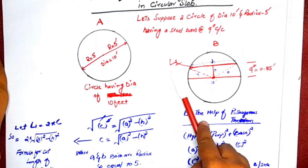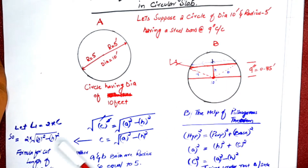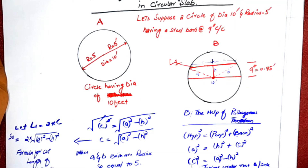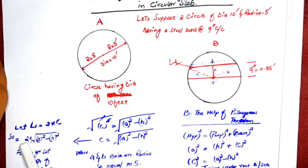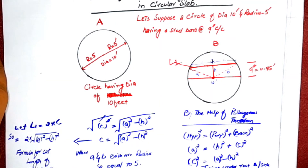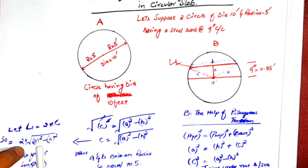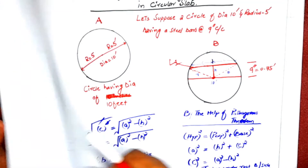Since L1 equals c plus c, we get L1 = 2c. Therefore the formula becomes: L1 = 2 × √(a² − h²). This formula for the cut length of a steel bar is now ready.